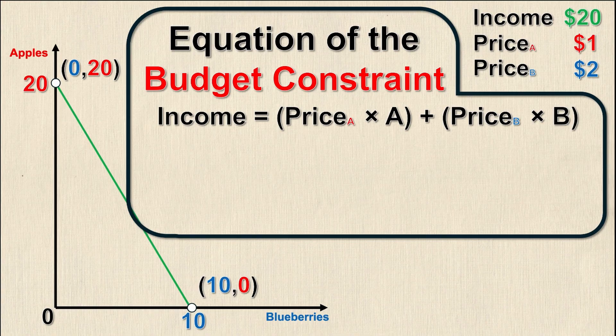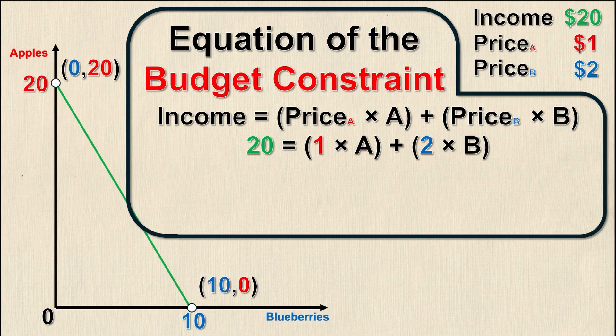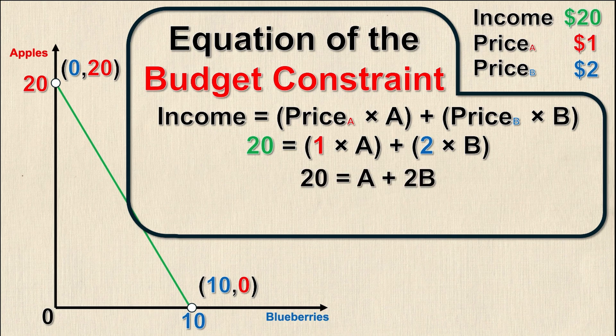I have the income and the two prices given, so I'm going to plug them in for this specific problem. That gives me 20 equals 1 times A plus 2 times B. The price of blueberries is $2 and B is the quantity. This simplifies to 20 equals A plus 2B.